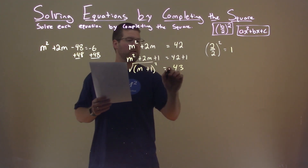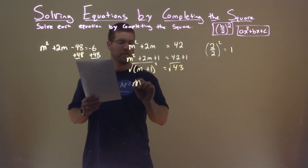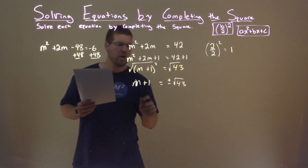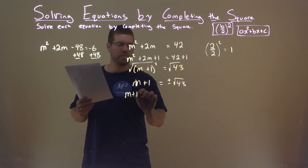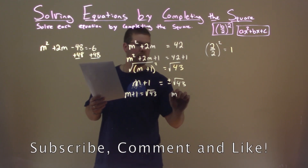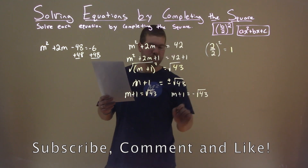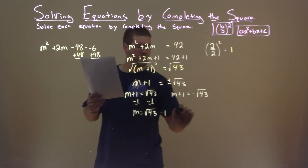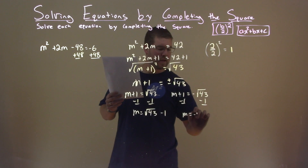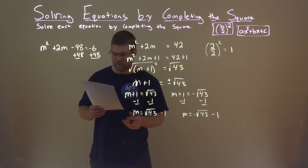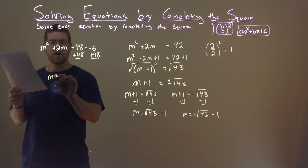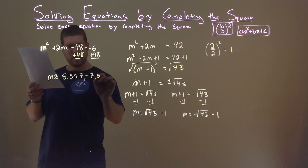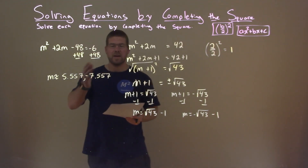I now have to take the square root of both sides: m plus 1 equals plus or minus the square root of 43. Breaking this into two parts: m plus 1 equals positive square root of 43, and m plus 1 equals negative square root of 43. Subtracting 1 from both sides: m equals square root of 43 minus 1, and m equals negative square root of 43 minus 1. Those in decimal form are approximately 5.557 and negative 7.557 — that is our final answer.